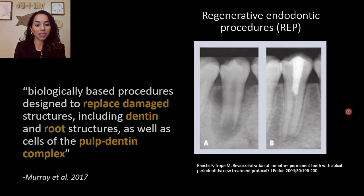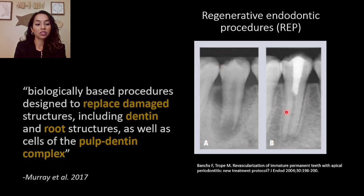From that same article, our goal is to take a tooth that looks like panel A — an immature necrotic tooth — and perform these REP procedures in hopes of getting a result like panel B. We're going to talk in detail about why panel B is the desired outcome.